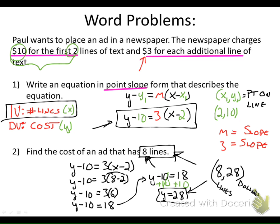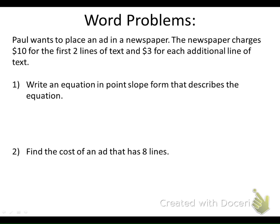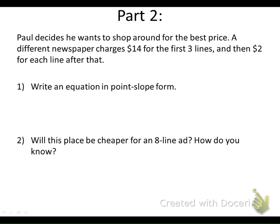Paul decides he wants to shop around for the best price. A different newspaper charges $14 for the first three lines and then $2 for each line after that. We're writing this equation in point-slope form.